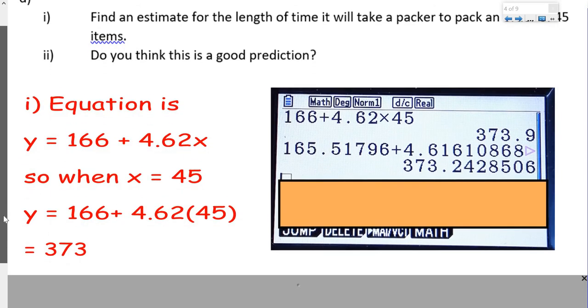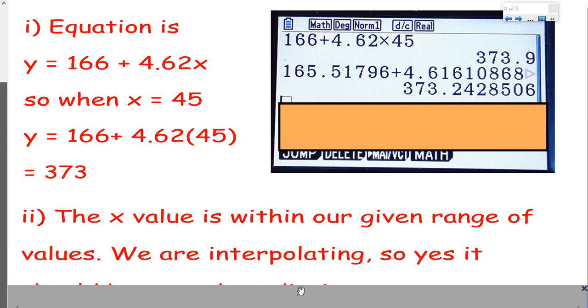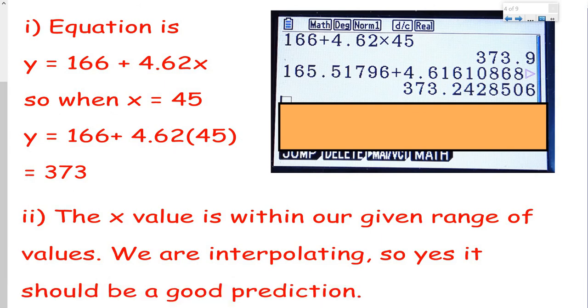Is this a good prediction? Well, the x value that we've got is within our given range of values. If you look back at that list, the smallest number of packages, the biggest number of packages, 45 is within it. So we are interpolating. Yes, it should be a good prediction.